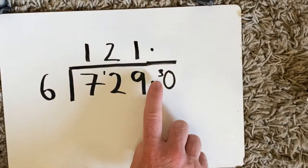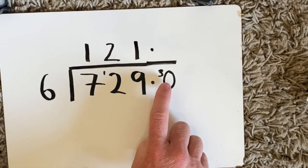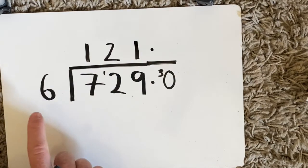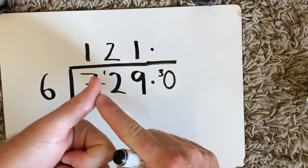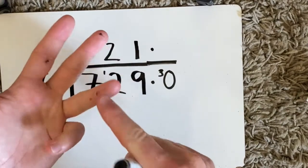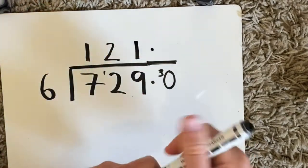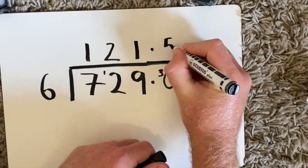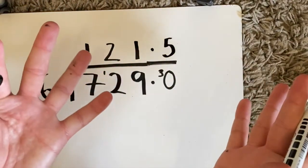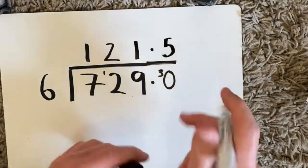Now this makes the zero 30 and then all I do is how many sixes in 30? 6, 12, 18, 24, 30—5. And I have no remainders left so now I've finished the question.